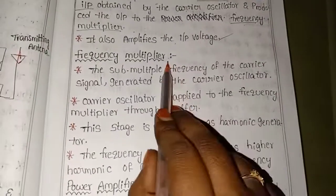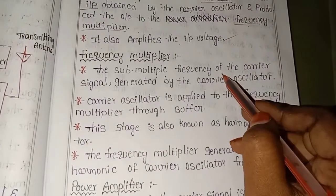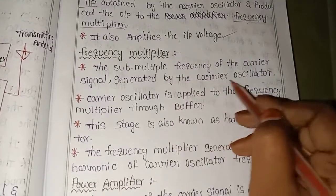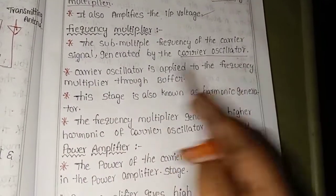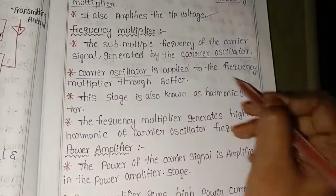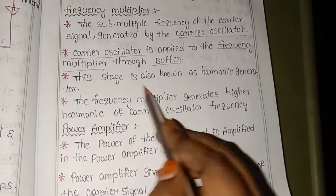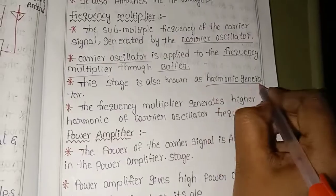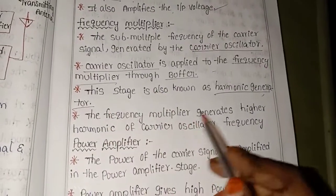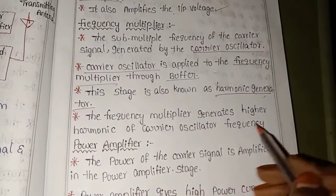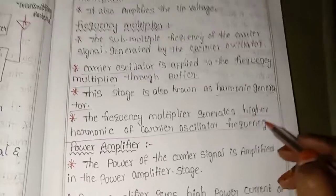The sub-multiple frequency of the carrier signal generated by the carrier oscillator is applied to the frequency multiplier through the buffer. The frequency multiplier is also called a harmonic generator. The frequency multiplier generates higher harmonics of the carrier oscillator frequency, thereby generating a high frequency output.